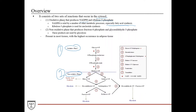NADPH is used by a number of other metabolic processes, especially fatty acid synthesis. The non-oxidative phase produces fructose 6-phosphate and glyceraldehyde 3-phosphate, which are intermediates that can then enter into glycolysis.